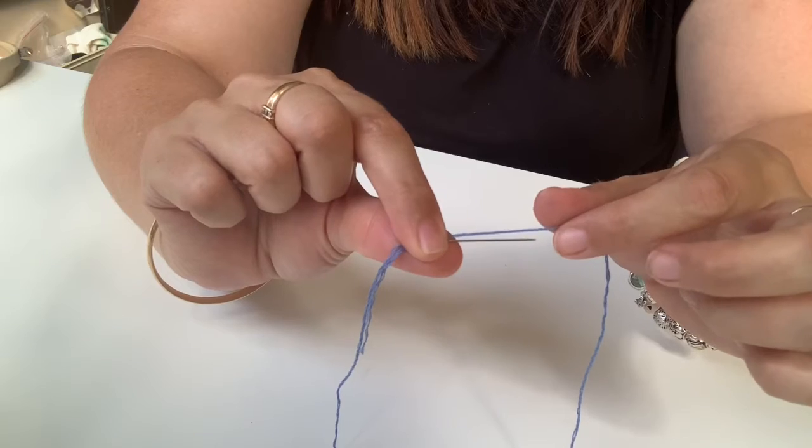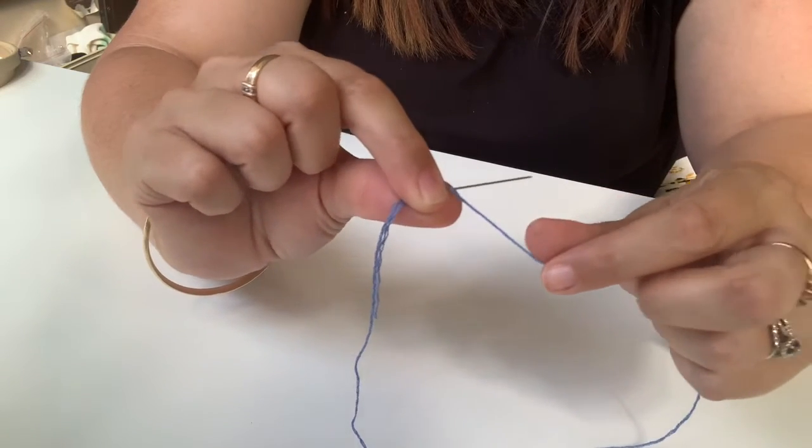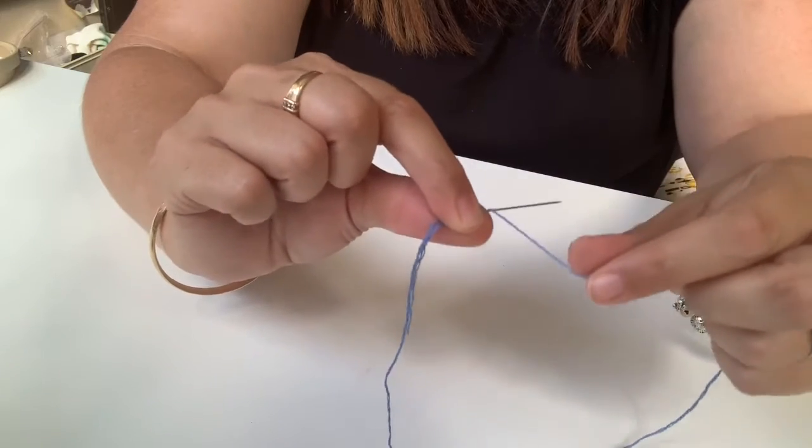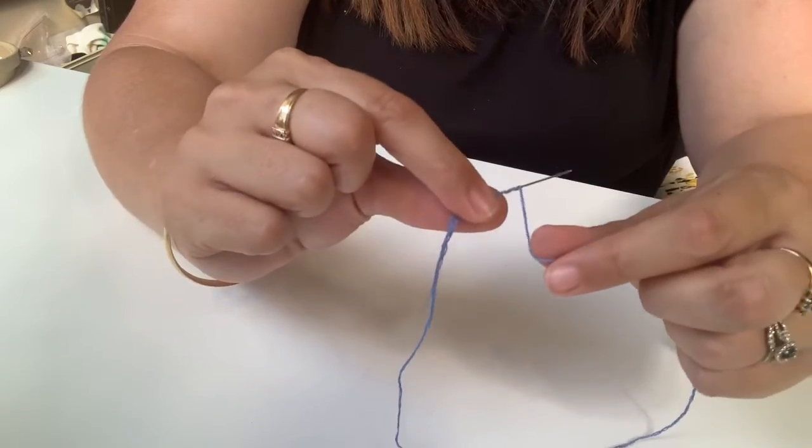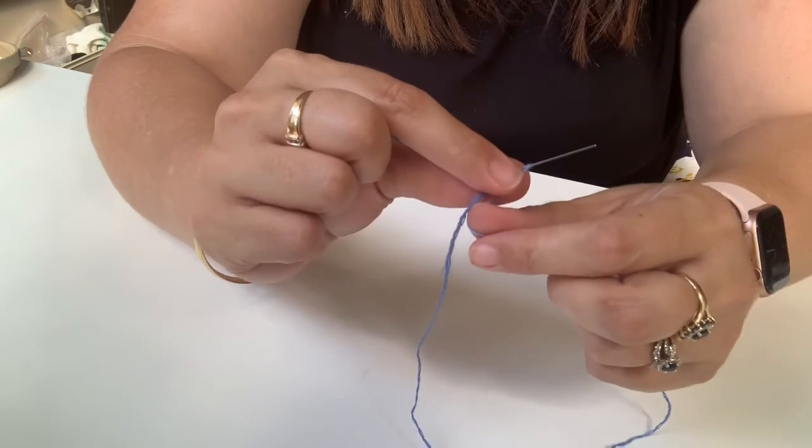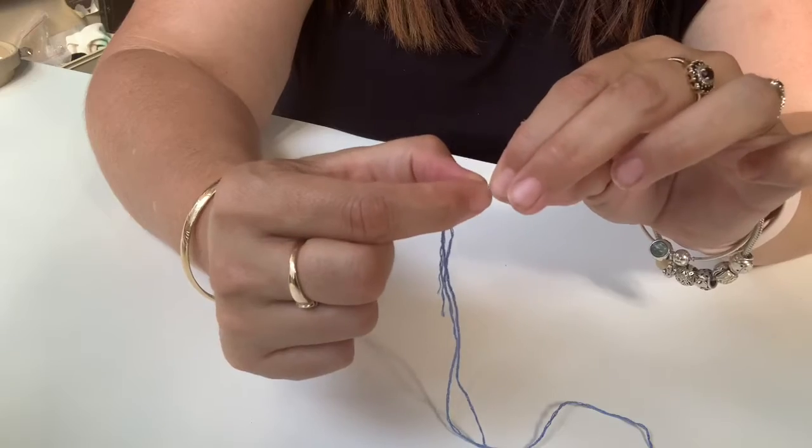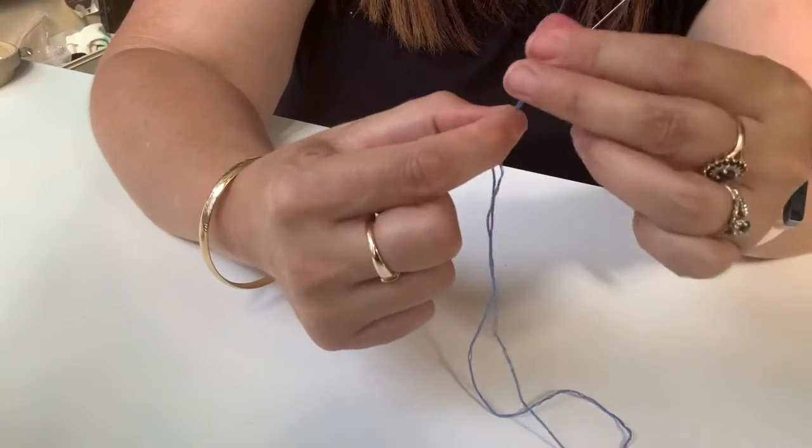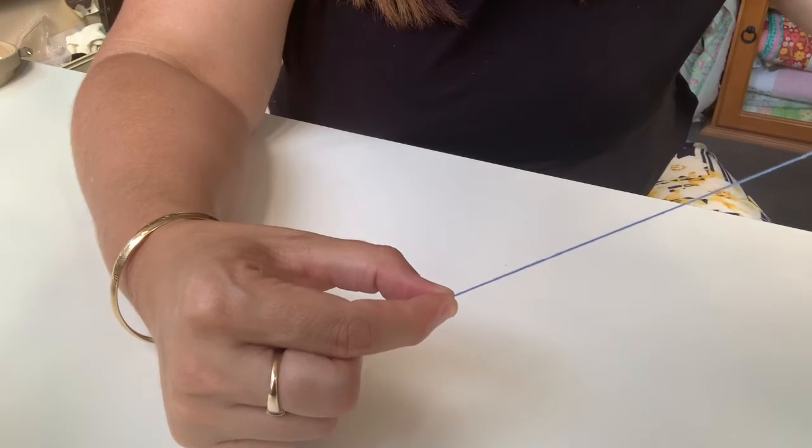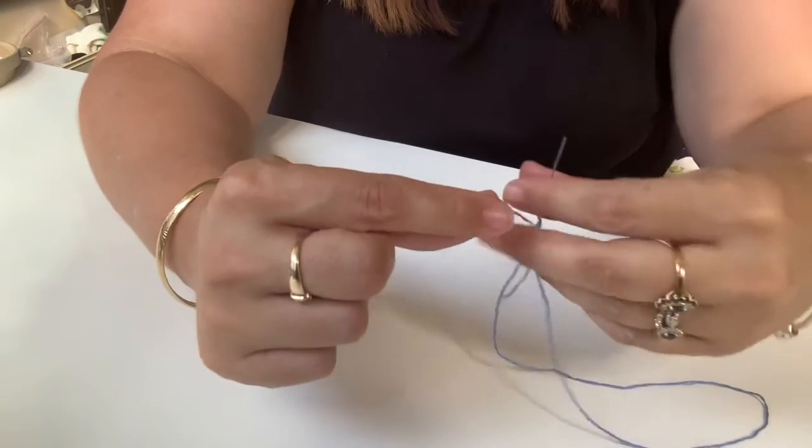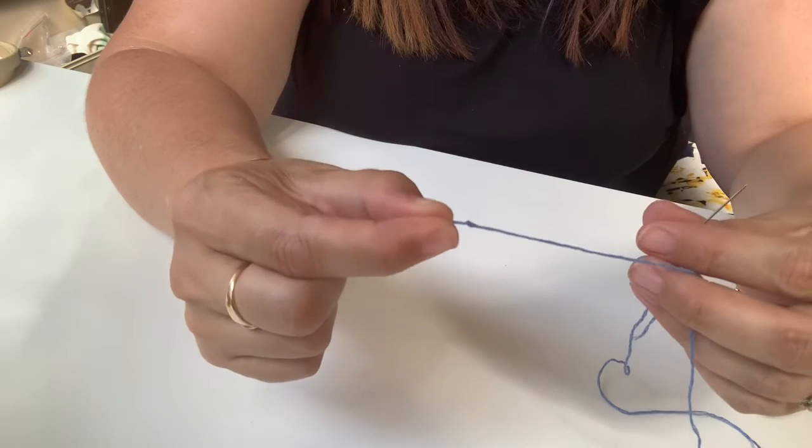And then with the tail we're going to wrap it around three times: one, two, three. We're going to slide those wraps underneath these fingers here and we're going to pull them all the way down our thread. And then when we get to the bottom we'll have our knot already tied.